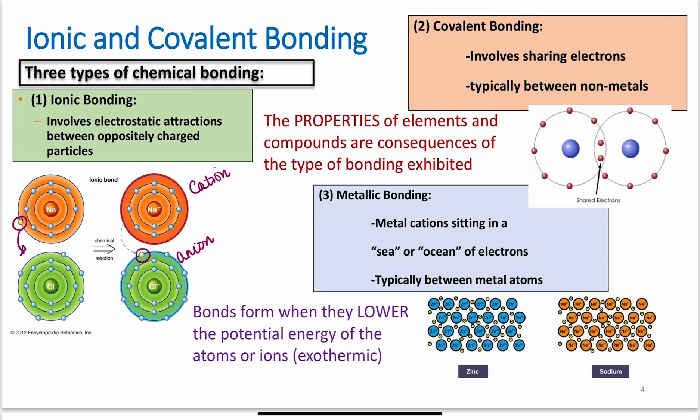And metallic bonding, the metal cations are sitting in a sea or ocean of electrons. We call this a sea of electron model. This is typically seen between metal ions. Again, the properties of the elements and the compounds are consequences of the type of bonding exhibited. So you need to understand the types of bonding that's occurring so that you can understand why the molecules behave as they do. Bonds form when they lower the potential energy of the atoms or ions. It's an exothermic process. Energy is released.